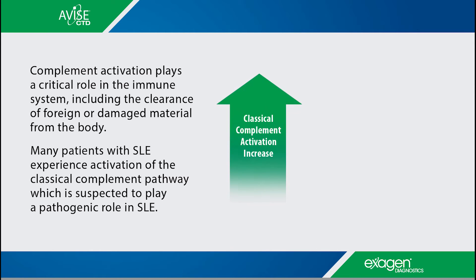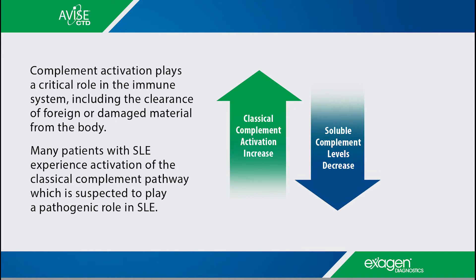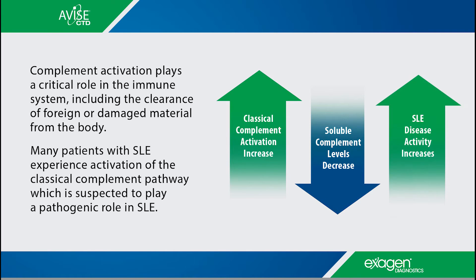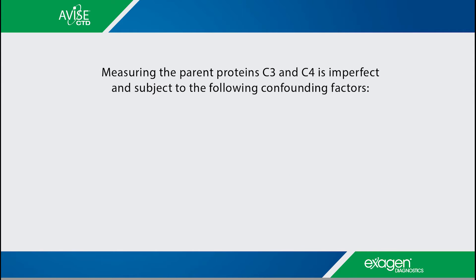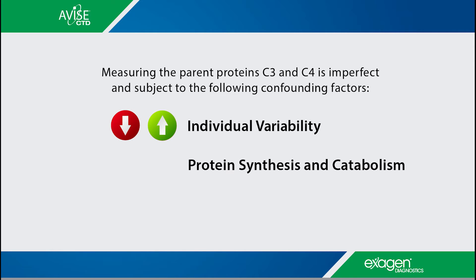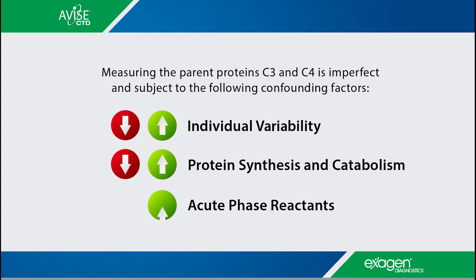When classical complement activation increases, soluble complement levels decrease. This is frequently associated with increases in SLE disease activity. Measuring the parent proteins C3 and C4 is imperfect and subject to the following confounding factors: individual variability, protein synthesis and catabolism, and acute phase reactants.